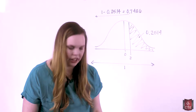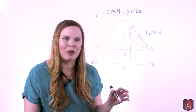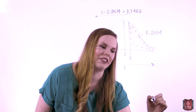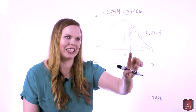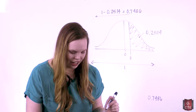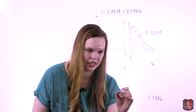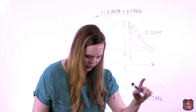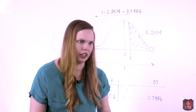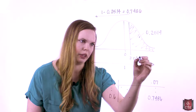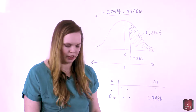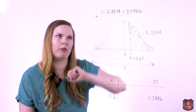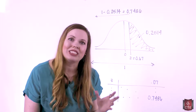Now that we have the area to the left, we go to the table and look in the body of the table to find where 0.7486 lies. This one is positive — it's greater than 0.5 and lies to the right of zero. It is in the 0.6 row and the 0.07 column, so z is equal to 0.67. When given an area to the right, all we have to do is take 1 minus that area to get the area to the left, then go to the table just like the first problem.